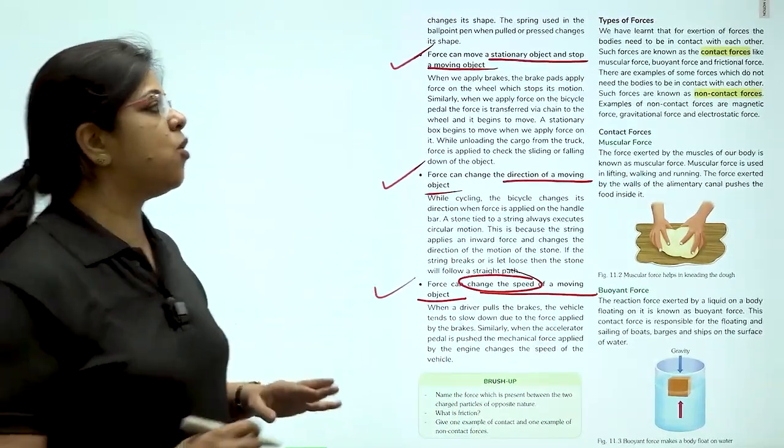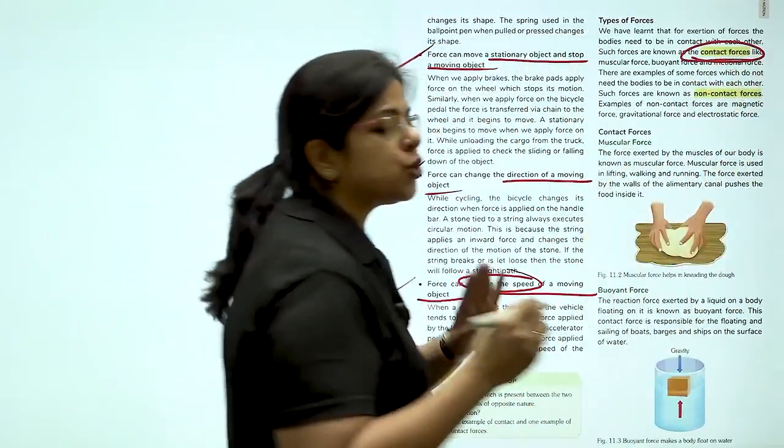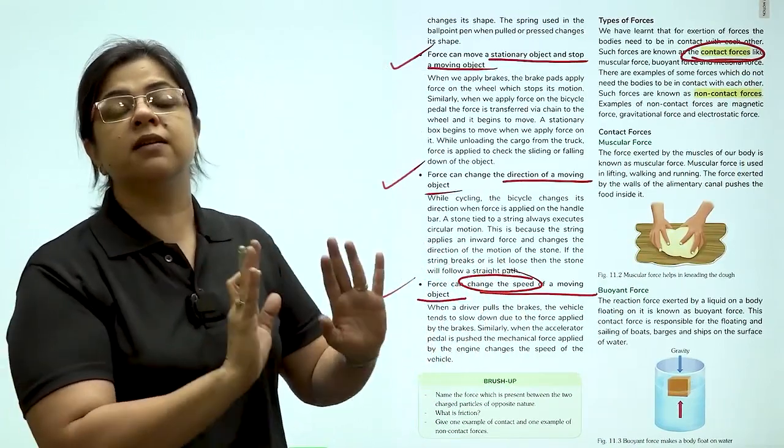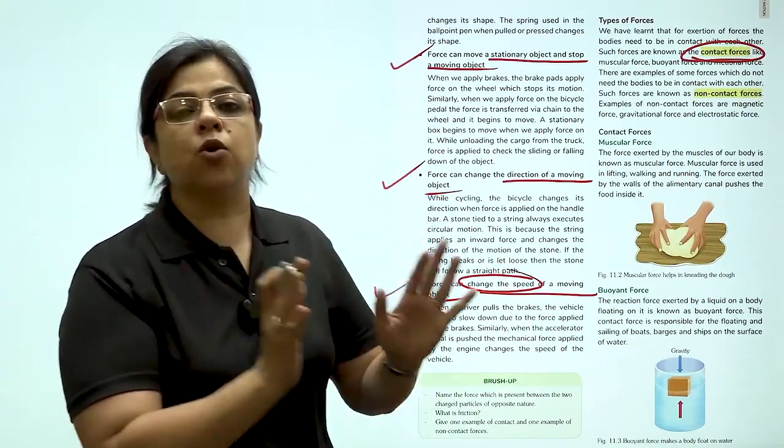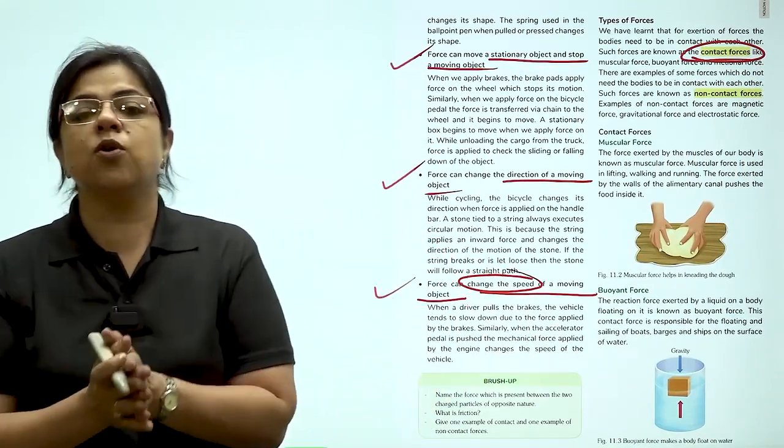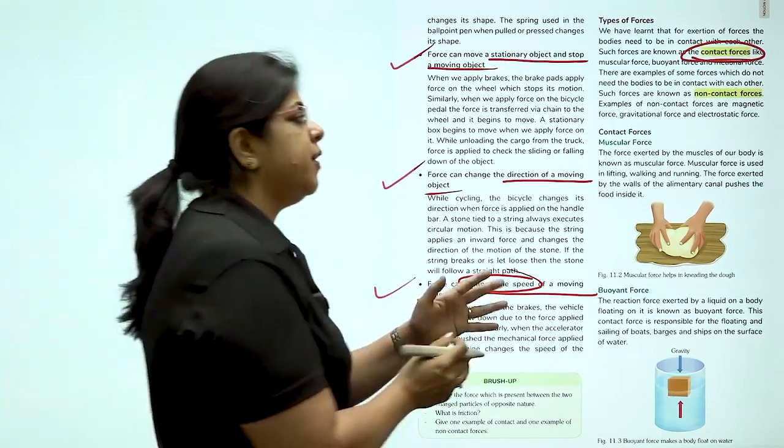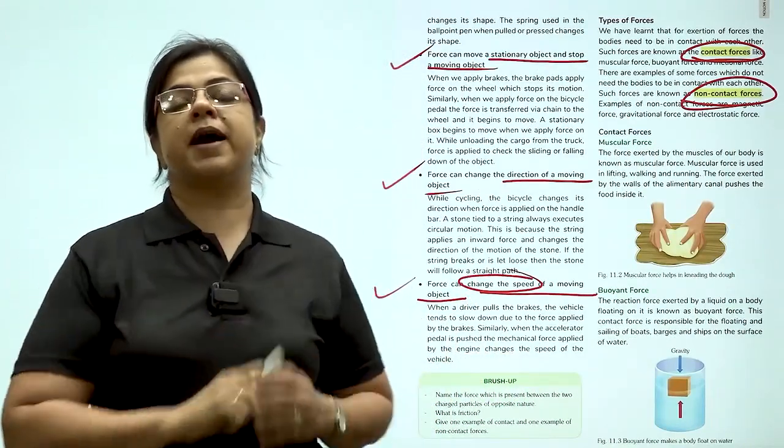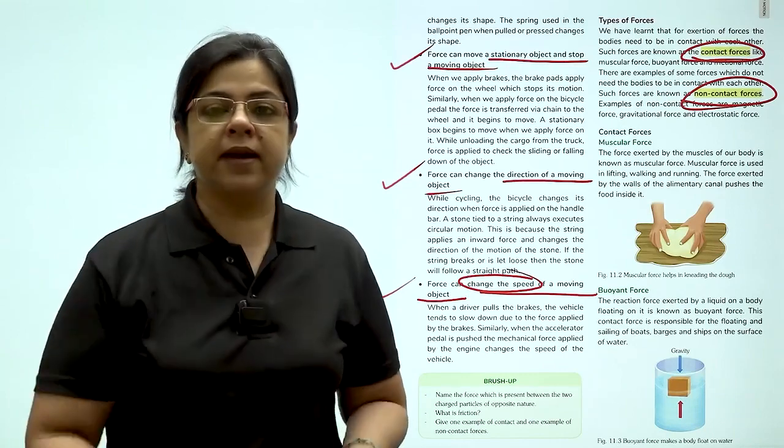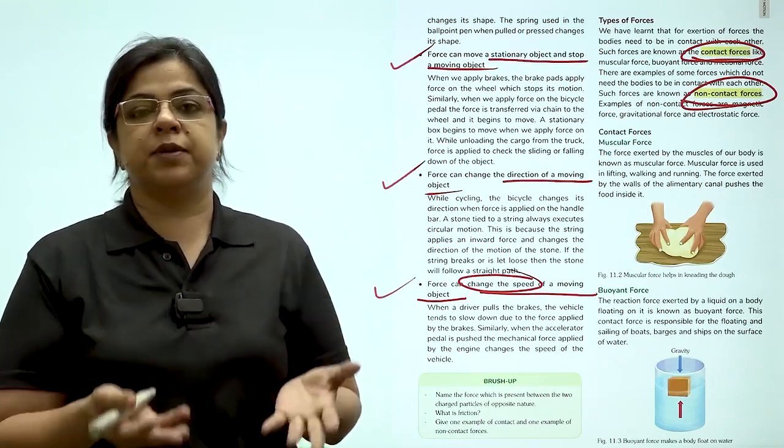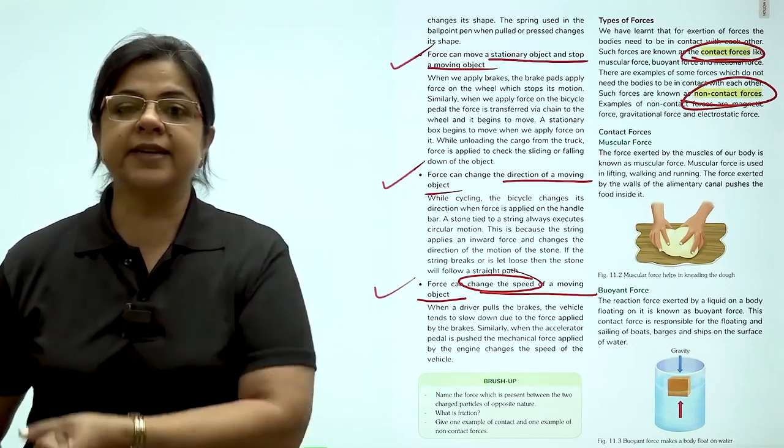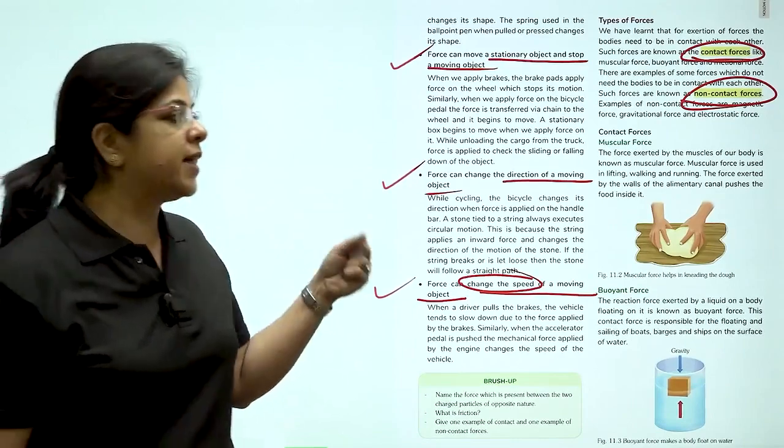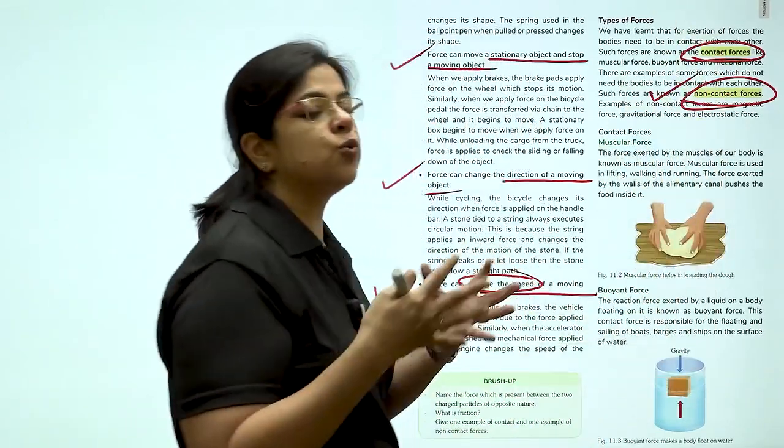Now, force can be of many types. When you push a table, you are touching the table. So, the force here which is being applied is contact force. There is a contact between you and the table. Whereas, if we talk about throwing a pen in the air and it comes back to us. Here, when I threw the pen, there was nothing between the pen and the floor. Yet, it came back. So, what kind of force is that? It is gravitational force and this is a non-contact force. There is no contact.